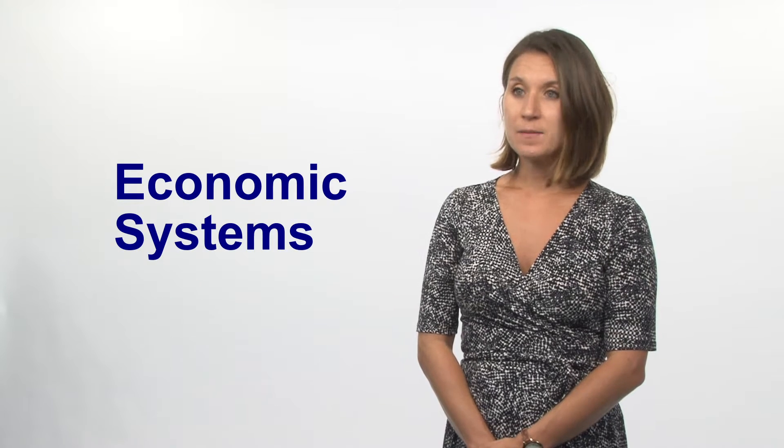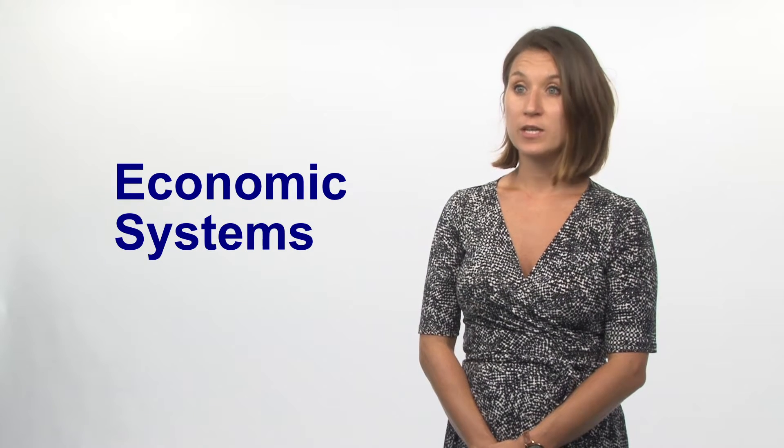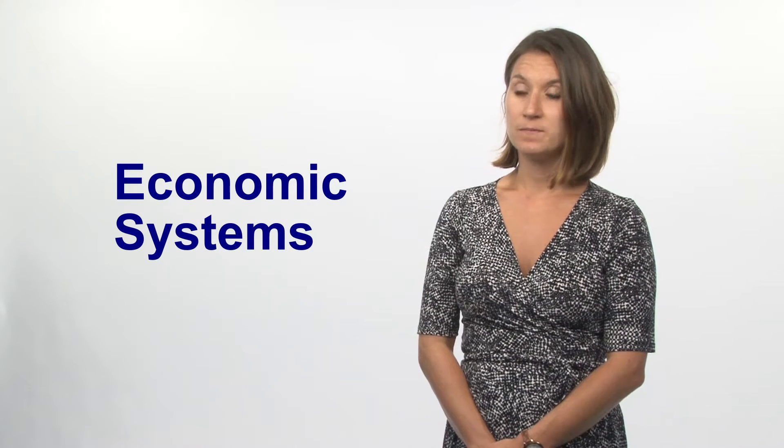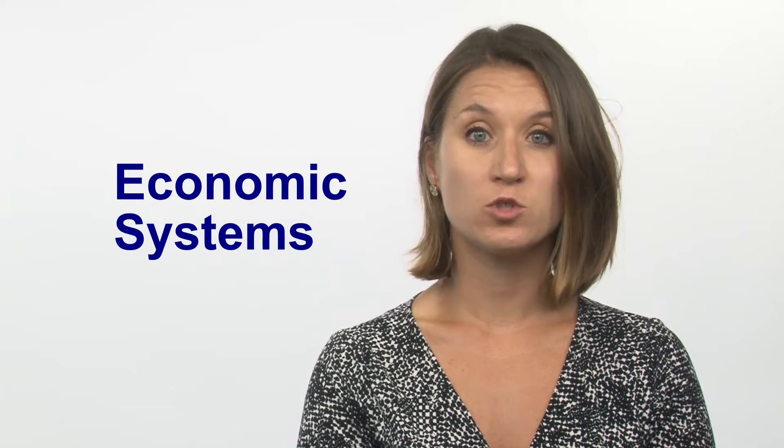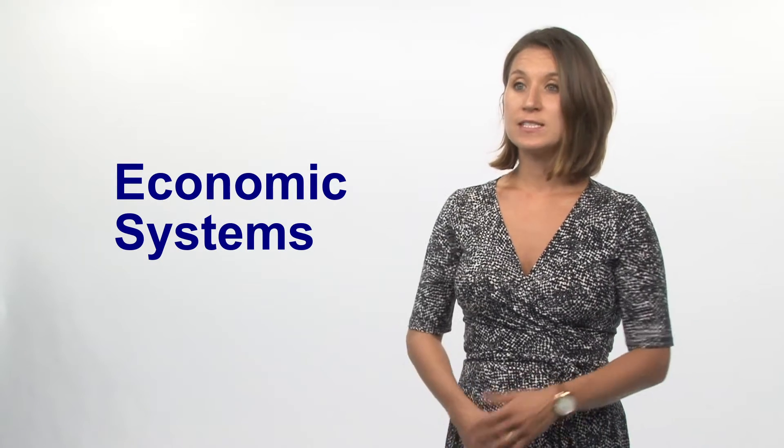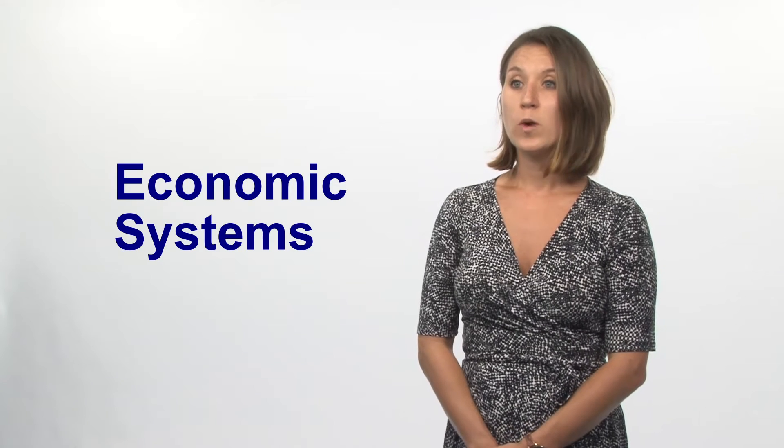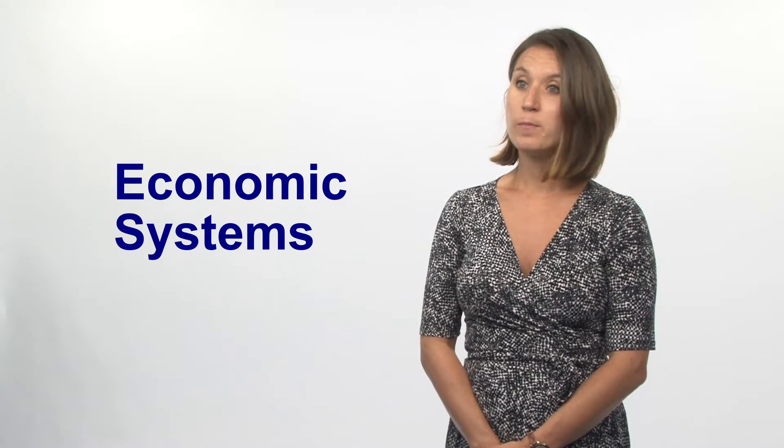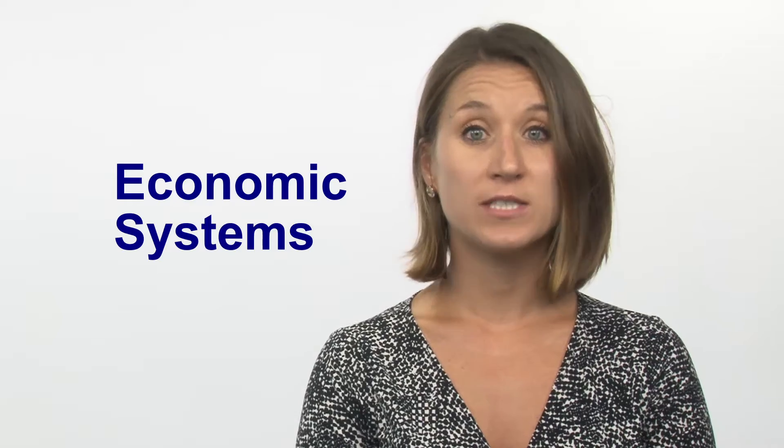To start, an economic system is a system of production, resource allocation, exchange, and distribution of goods and services. When we look at these systems, we answer: what does an economy produce, how much does it produce, and who receives the output.